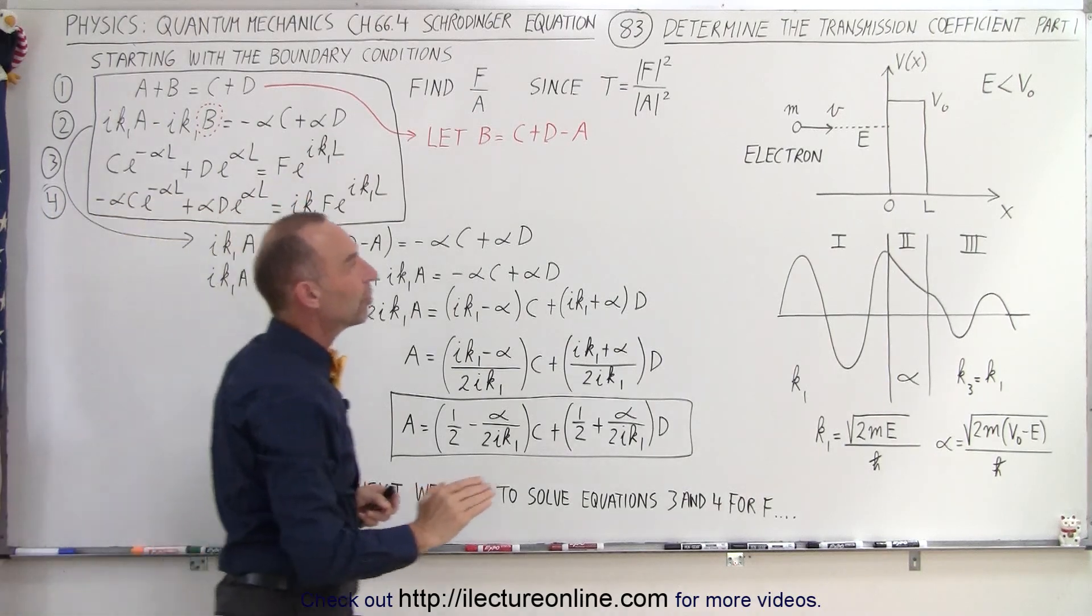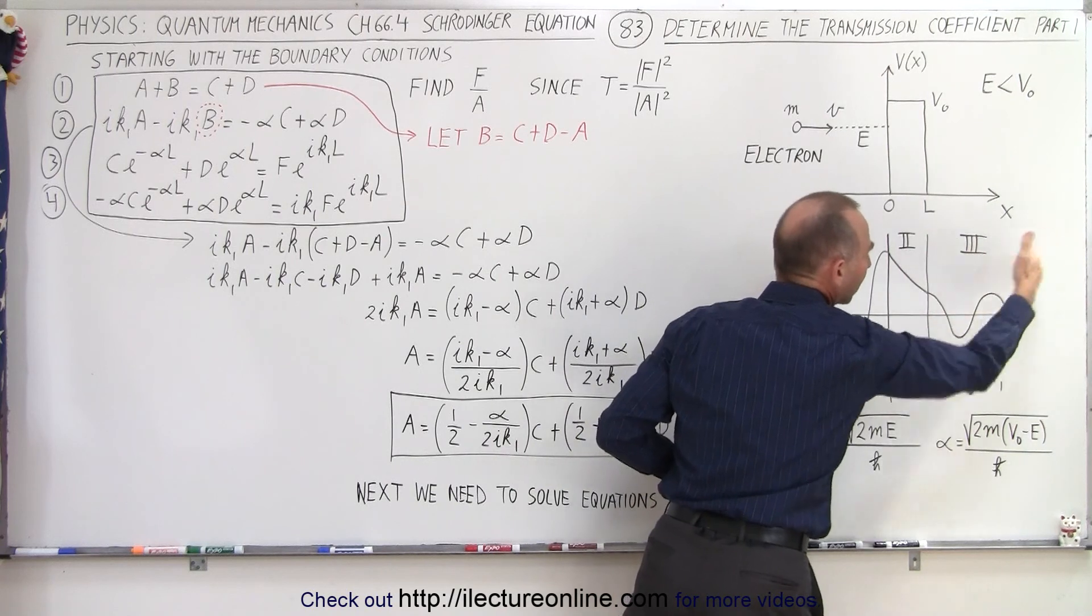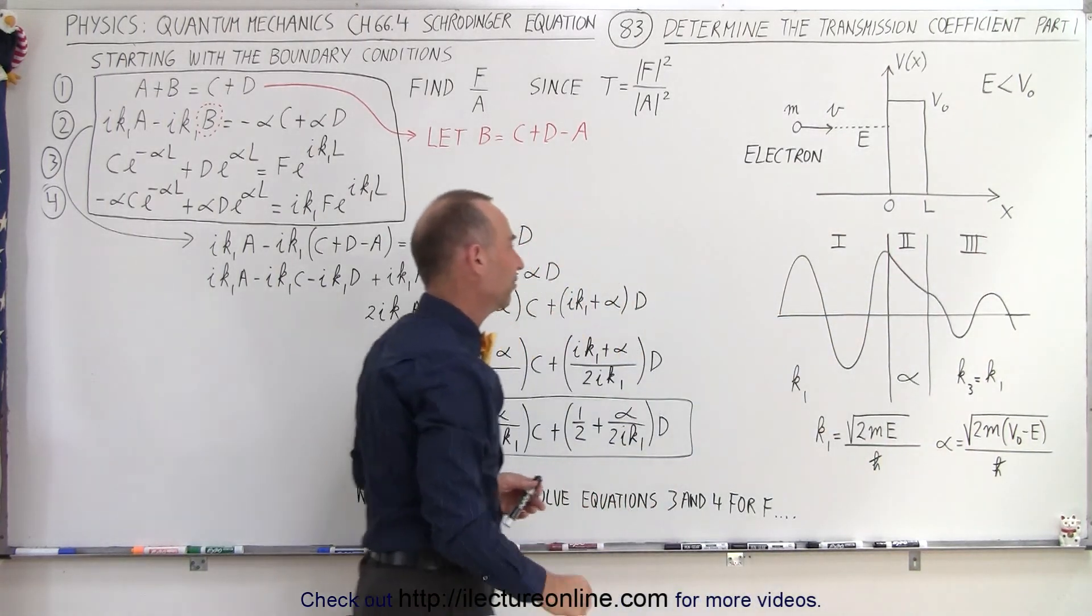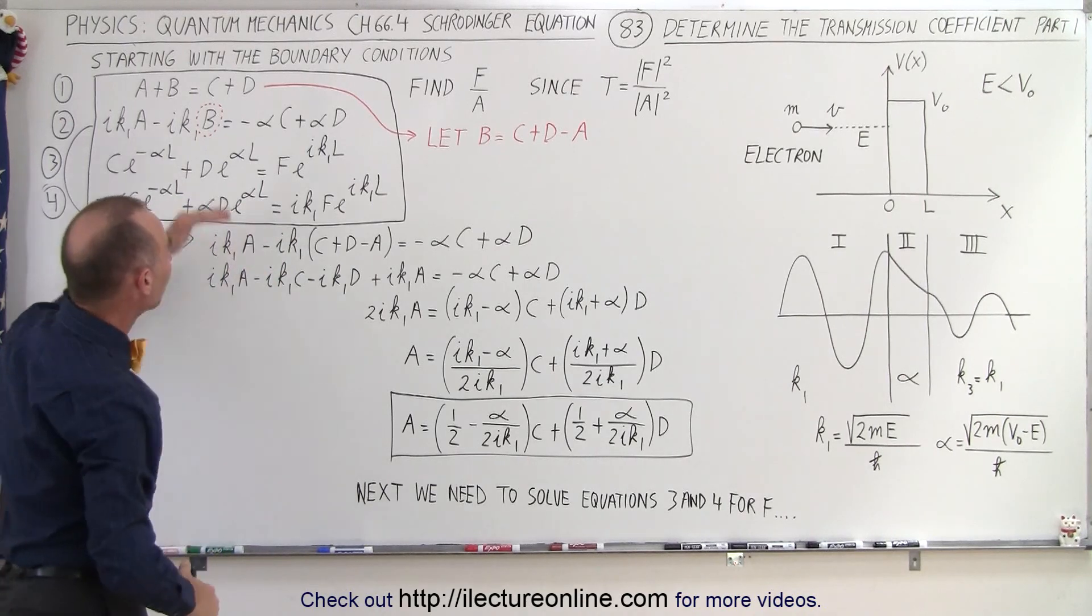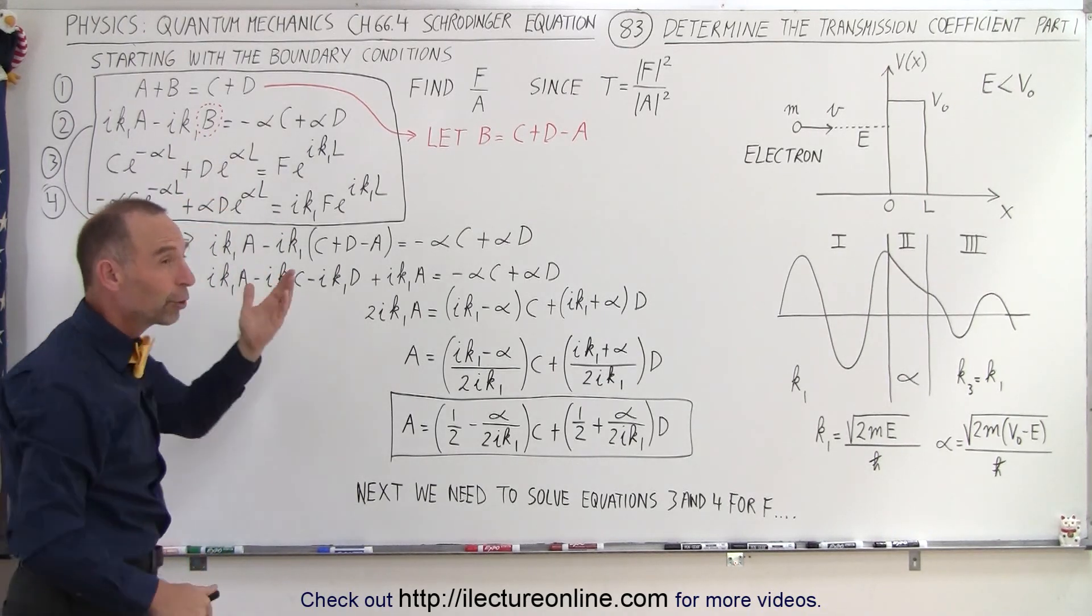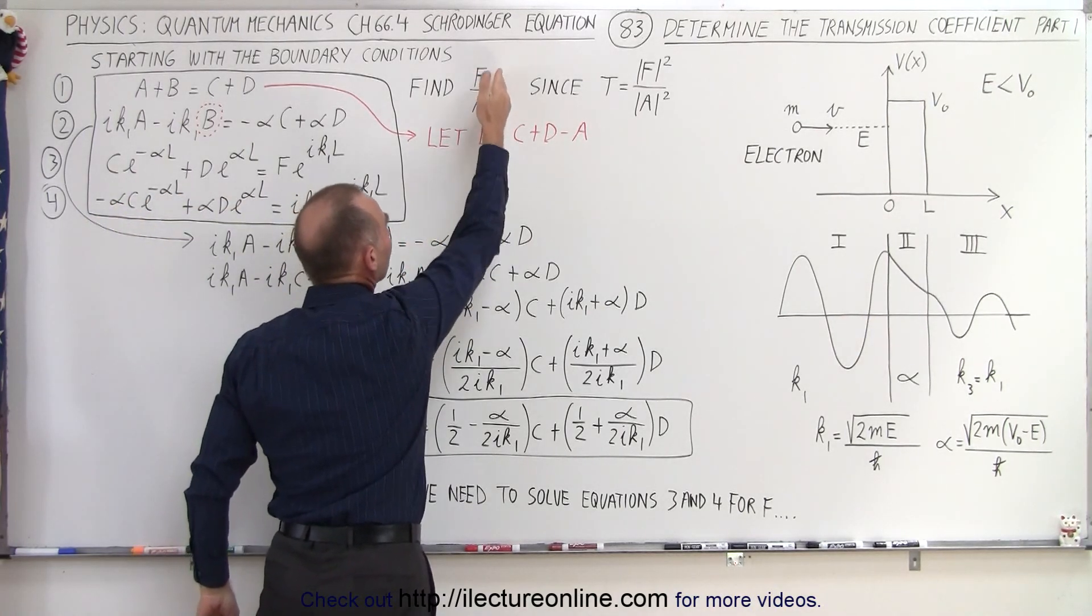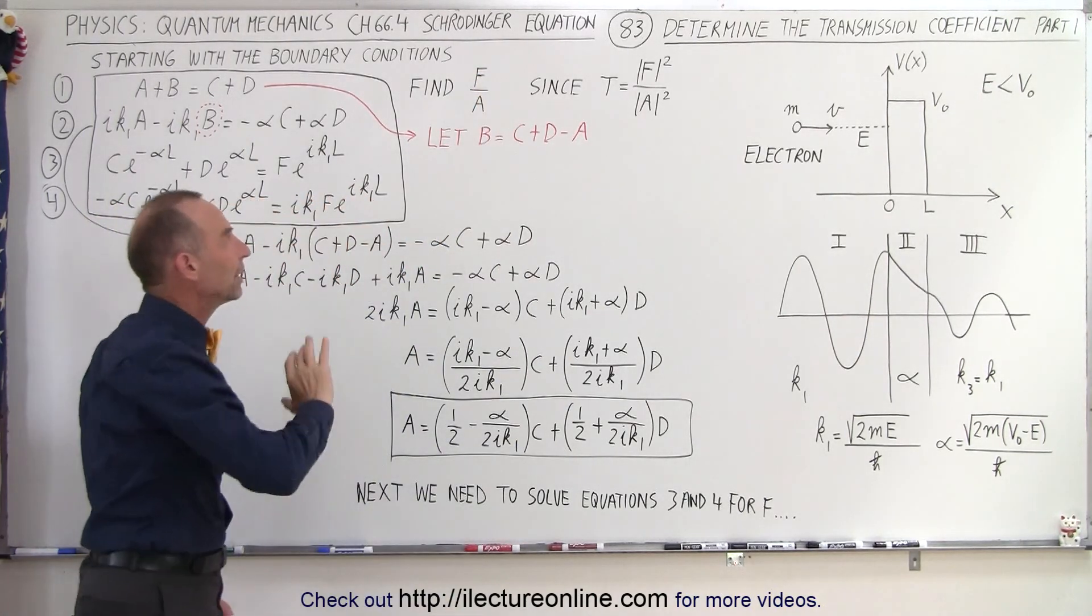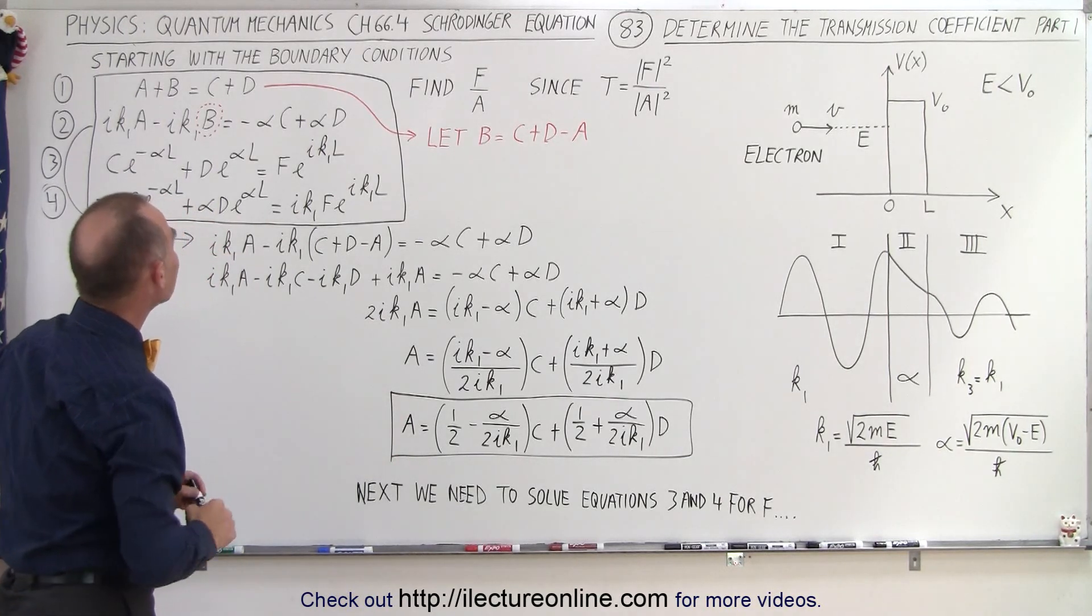g was set equal to zero because in region 3 we will not have any particles moving to the left, because there's nothing there to reflect them off of. So we have five constants a, b, c, d, and f, four equations, which means four equations, five unknowns. That allows us to solve this for a fraction, one unknown over the other. We need to eliminate the other three unknowns: b, c, and d.